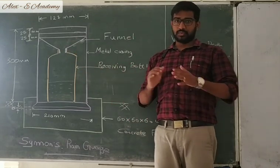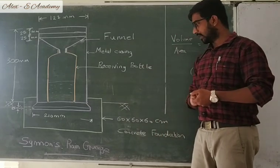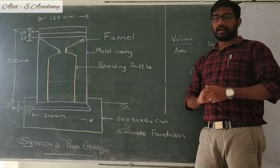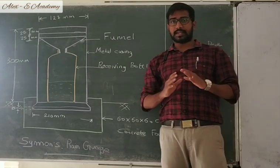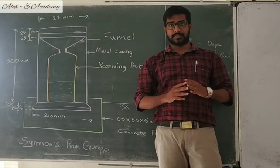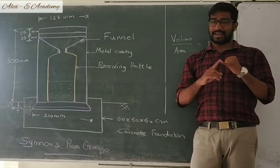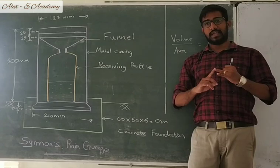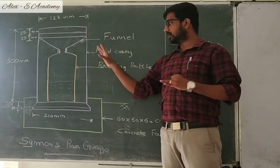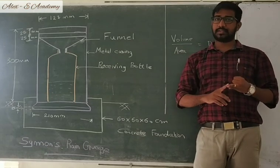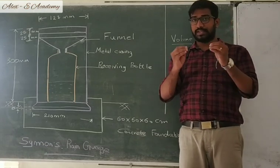Now let's see the advantages and disadvantages of Simon's rain gauge. The main advantage is it is less costly because there is no sort of electronic equipment required in this Simon's rain gauge, so its operating and maintenance cost will be very less.